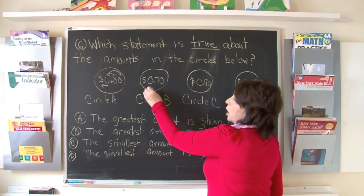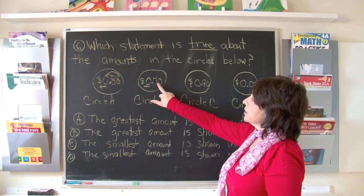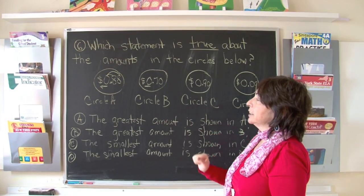Circle B, again, no whole numbers, no dollars. Seven tenths, zero hundredths, or seventy cents.